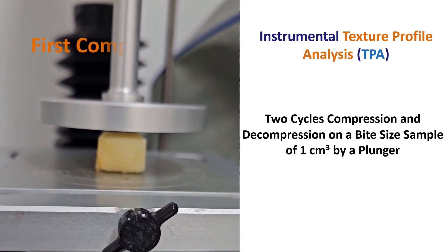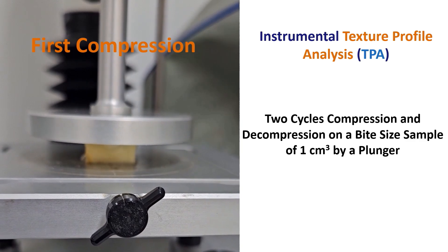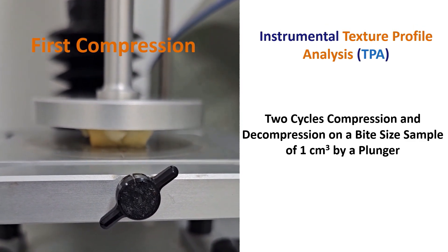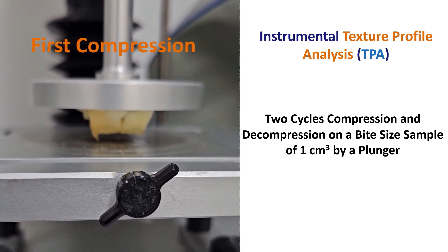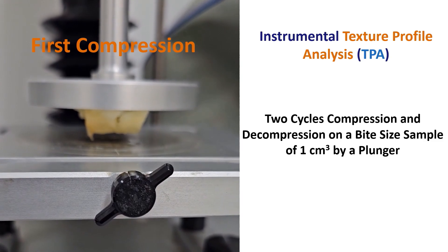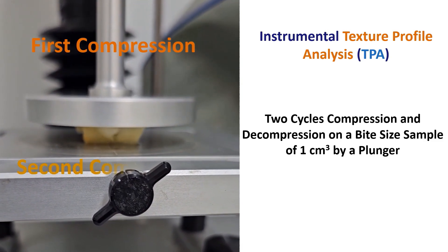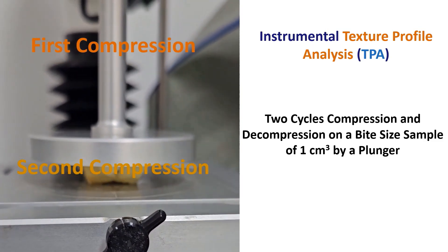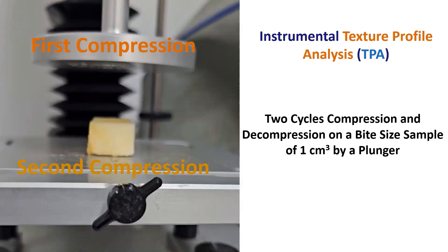Instrumental texture profile analysis, or TPA, is a two-cycle compression and decompression on a bite-sized sample of one centimeter cube by a plunger. I have a date fruit, I remove the pit, and I'm going to eat.